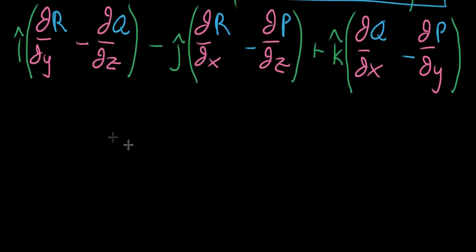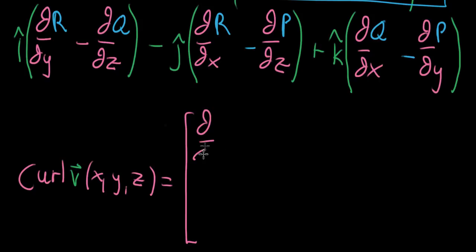If you were writing it as a column vector, it would look like saying the curl of your vector-valued function v as a function of x, y, and z is equal to—and then what I'd put in for this first component would be what's up there. So that would be your ∂/∂y of r minus ∂q/∂z. And I won't copy it down for all of the other ones, but in principle, whatever this j component is—and I guess we're subtracting it—you'd copy that as the next component.